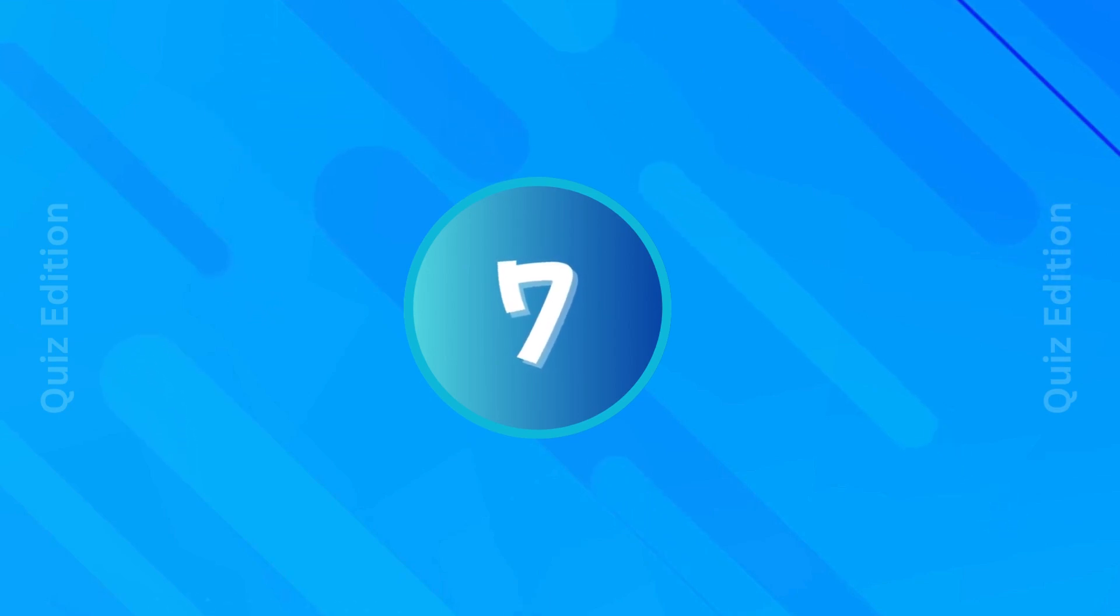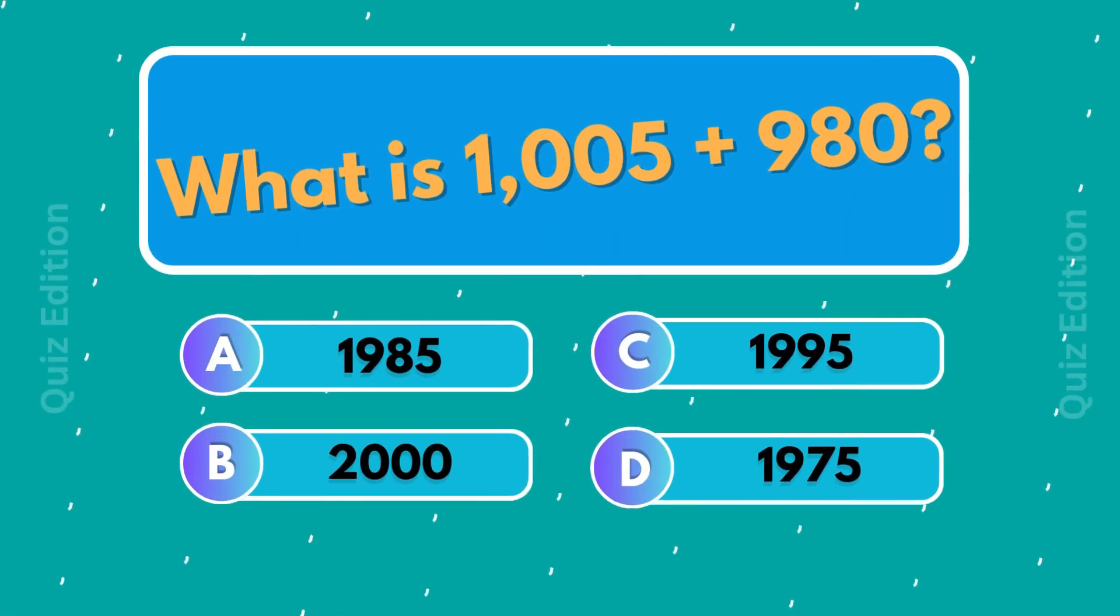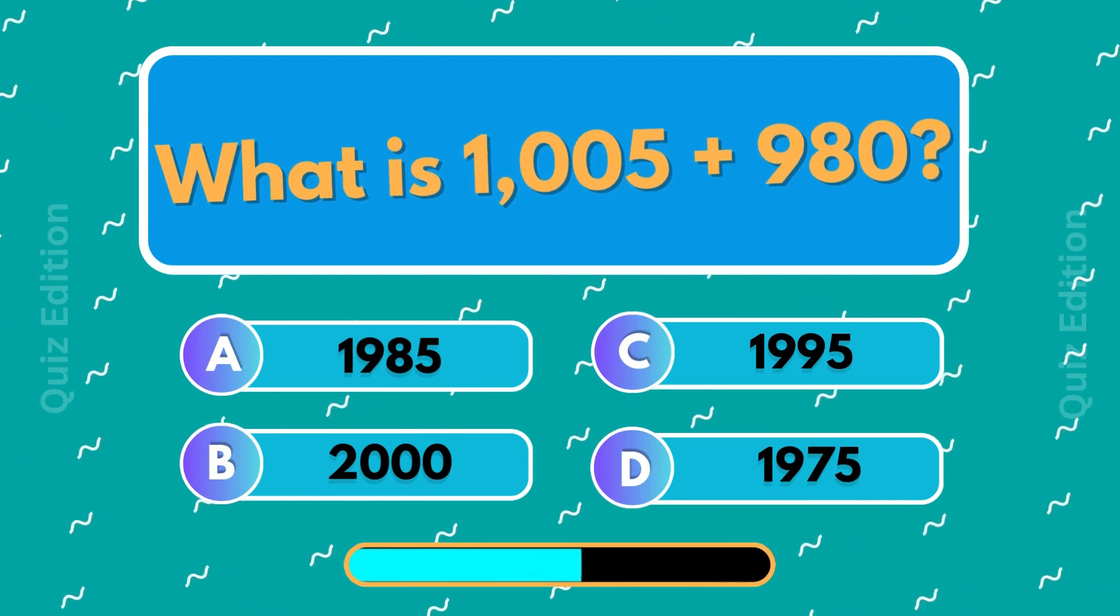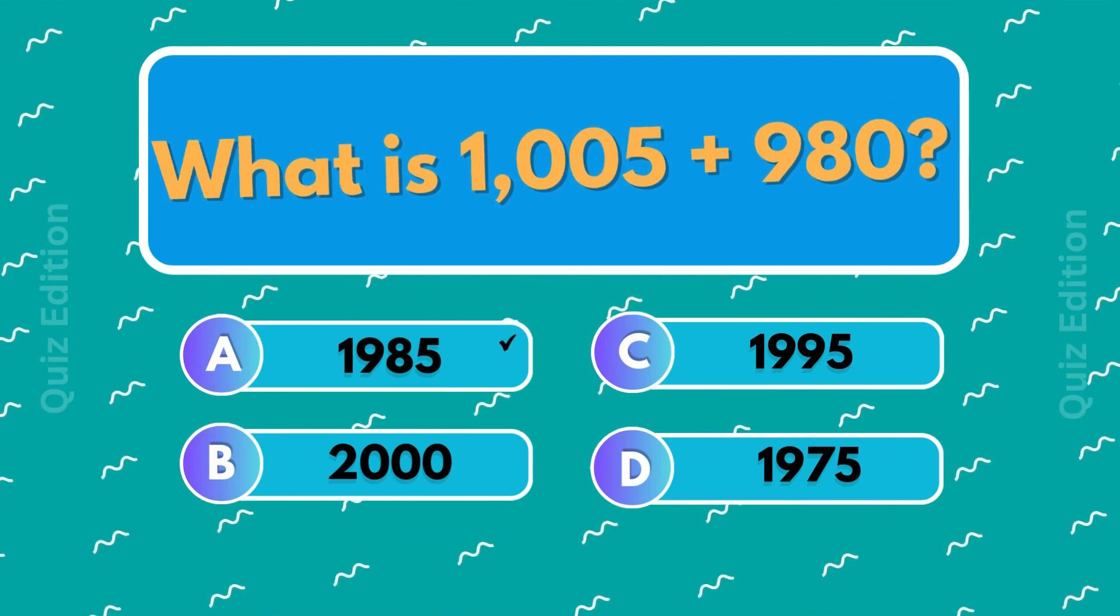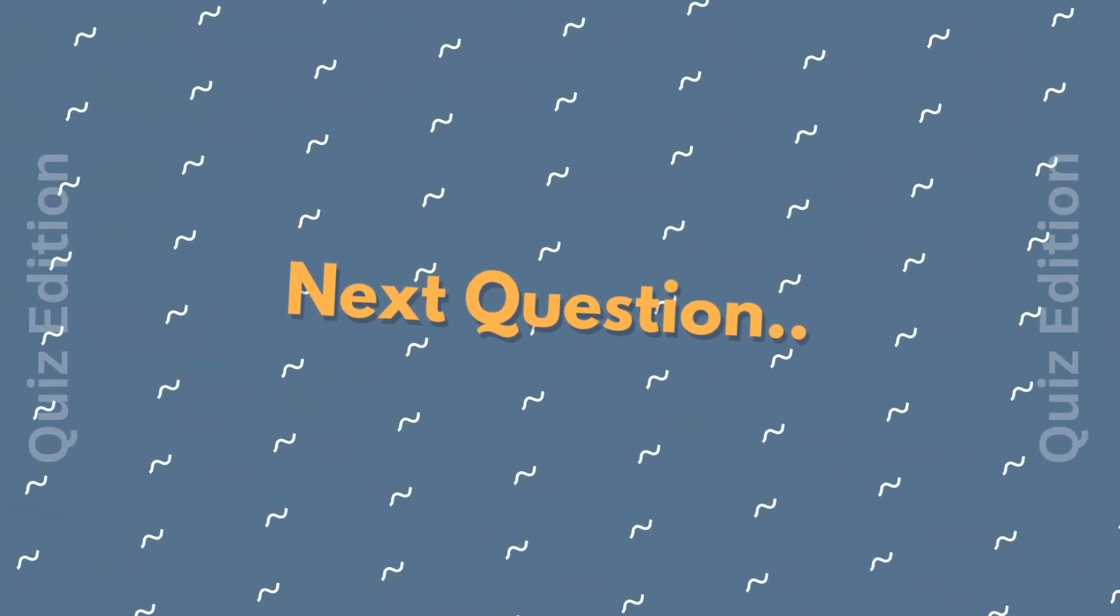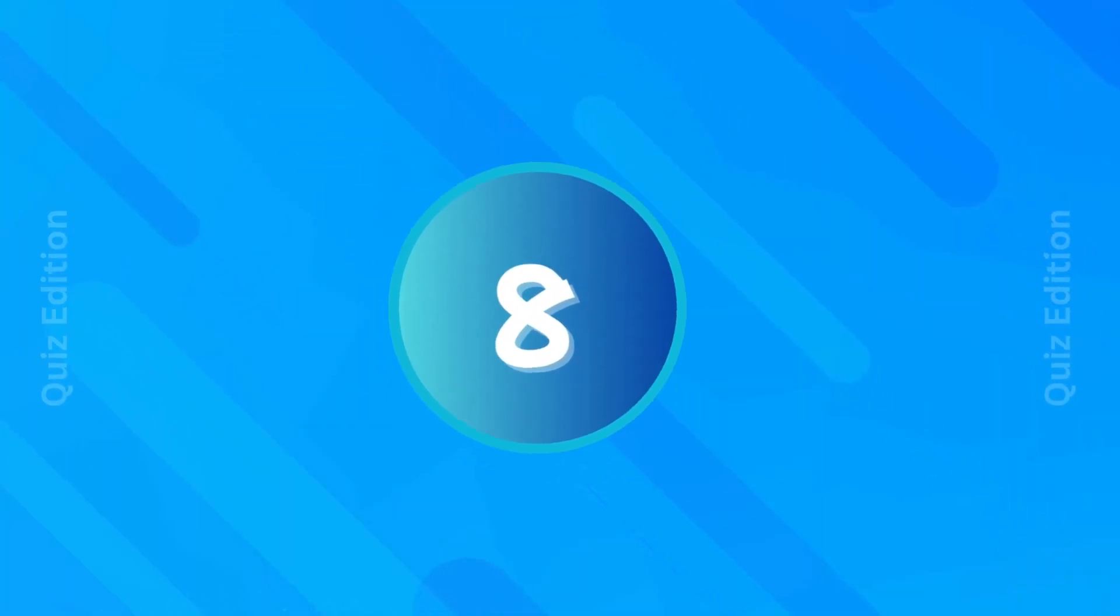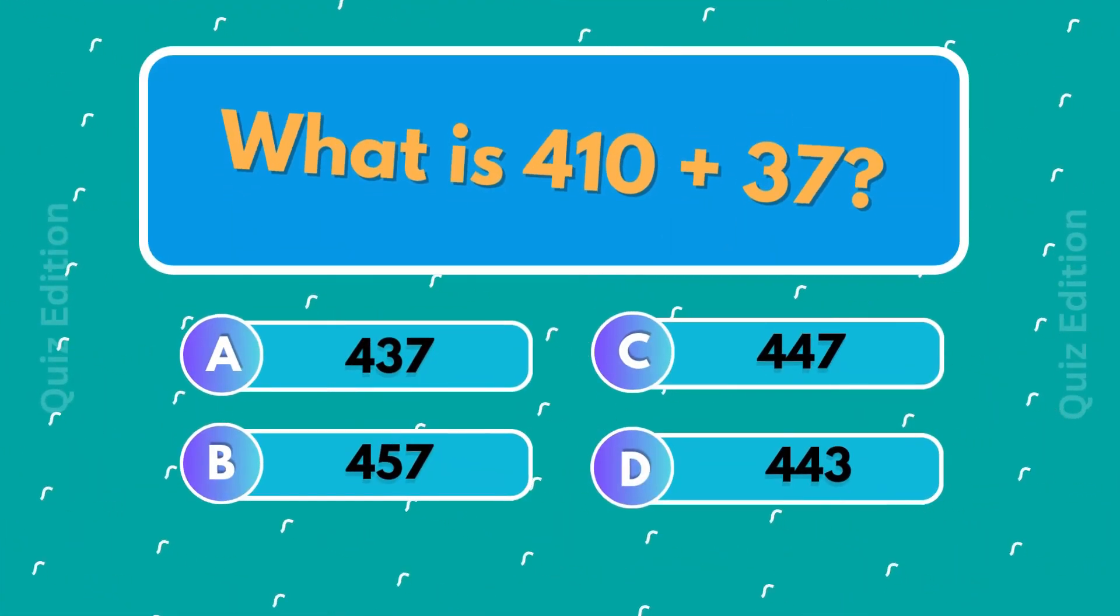What is 1,005 plus 980? 1,985. What is 410 plus 37?